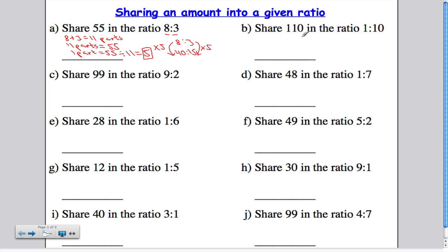Let's have a look at the second one here. I want to share 110 in a ratio 1 to 10. So again, step 1 is work out the total number of parts. And we get that by adding this number and this number. So, 1 plus 10 gives me 11. So I know that 11 parts is going to be equal to the total amount.